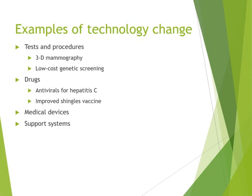Some examples of technology change include tests and procedures like 3D mammography and low-cost genetic screens, which are getting more popular — you see them commercially through Ancestry.com and 23andMe. Antivirals for hepatitis C have become much more sophisticated, causing fewer issues. The improved shingles vaccine is a big improvement for baby boomers who have those issues. We also have medical devices such as knee braces, arm braces, brackets, chest clamps, and support systems in general.